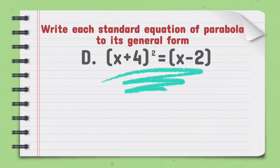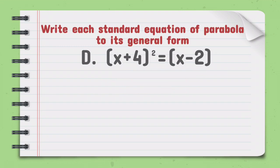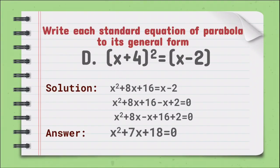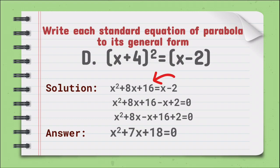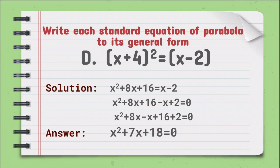For the last equation, we have the quantity of x plus 4 squared equals the quantity x minus 2. Since the right side should equal 0 in general form, we first need to expand the quantity x plus 4 squared. This becomes x times x equals x squared, and positive 4 times 2 gives 8x, and positive 4 times positive 4 gives positive 16. For the right side, we copy x minus 2 and transpose the equation. So our new equation is x squared plus 8x minus x equals negative 2, and negative 16 equals 0. Arranging the terms: x squared plus 8x minus x is 7x, and negative 2 minus 16 gives positive 18. The final answer is x squared plus 7x plus 18 equals 0.